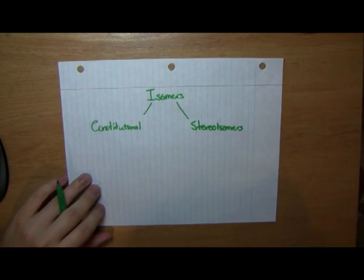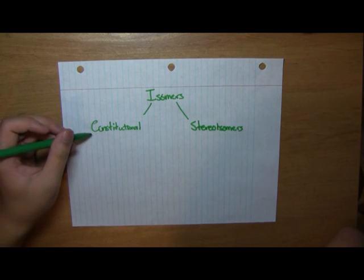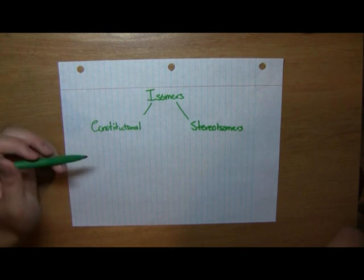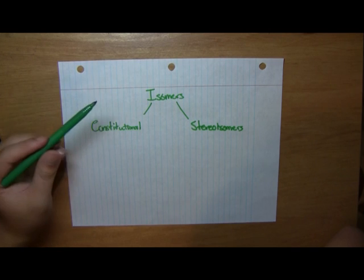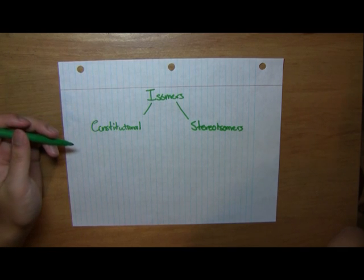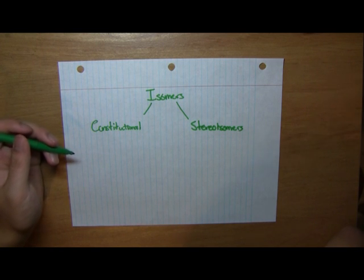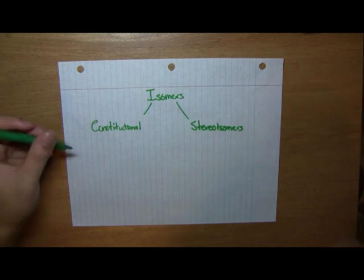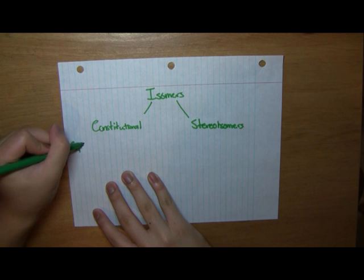So what are the differences? A constitutional isomer is defined as a group of molecules which share the same molecular formula, but the atoms in the molecules are connected in a different way or order. So let's first give an example of this. Let's start with the molecular formula C4H10.